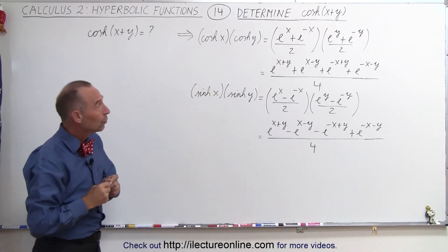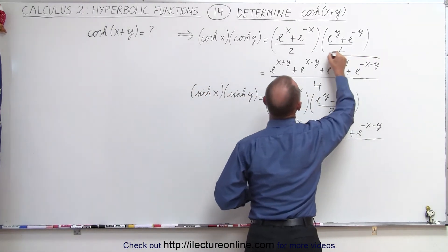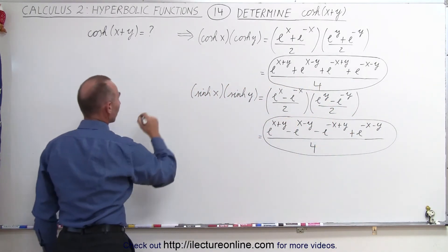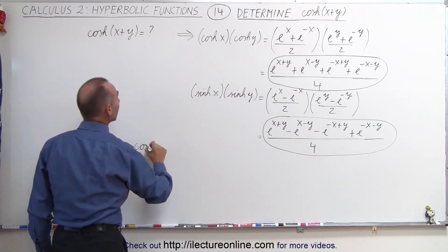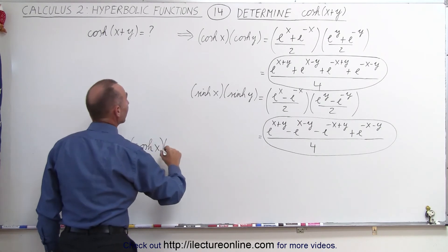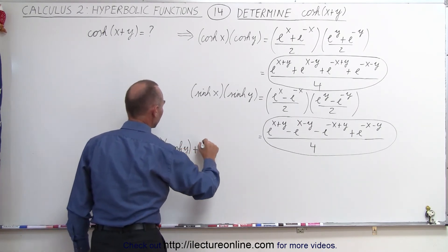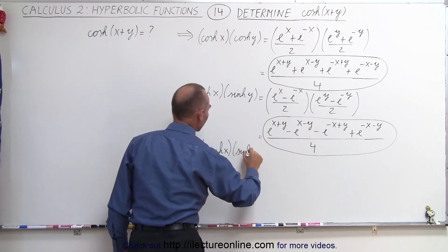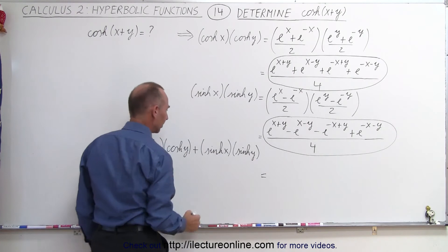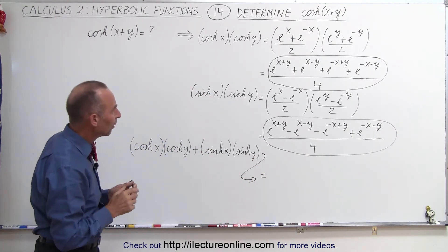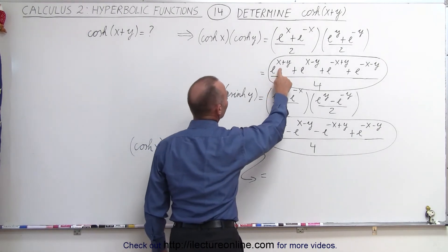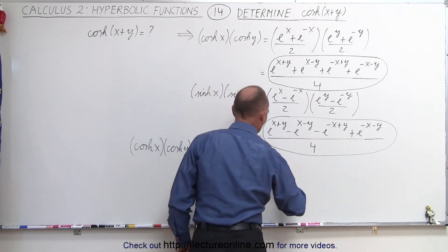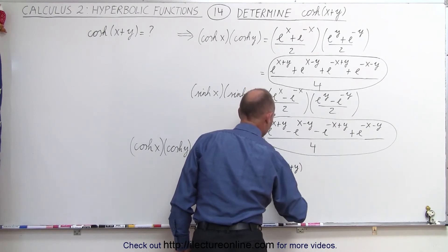Now we're going to add those two results together — the result of the first product, the hyperbolic cosine of x times the hyperbolic cosine of y, added to the hyperbolic sine of x times the hyperbolic sine of y. Let's see what we get. Notice we have e to the x plus y divided by 4 from the first product and e to the x plus y divided by 4 from the second. When we add those together, that gives us 2 e to the x plus y divided by 4.